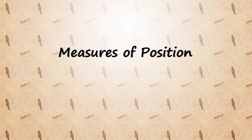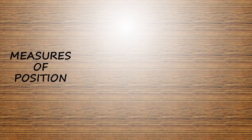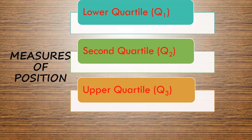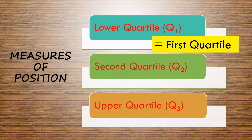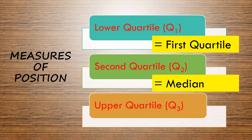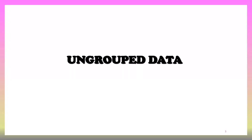Hi, today's lesson is measures of position, also known as measures of location. There are three measurements: lower quartile, known as first quartile; second quartile, known as median or middle value — you have learned about this in measures of central tendency; and last, upper quartile, known as third quartile. First, focus on ungroup data.